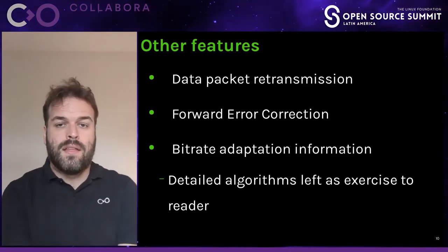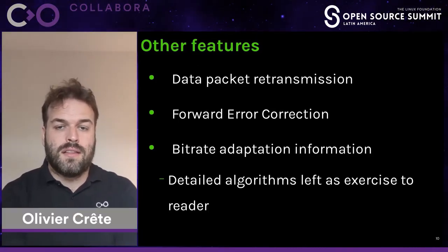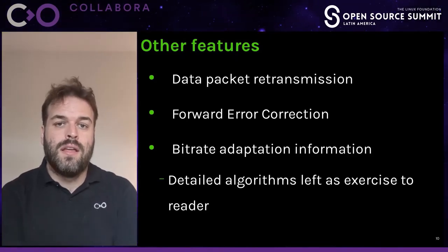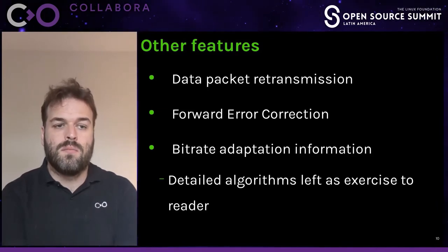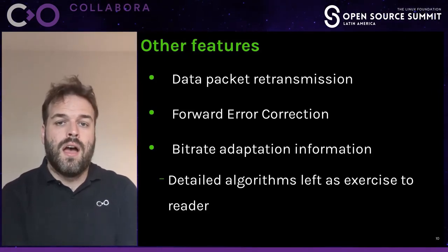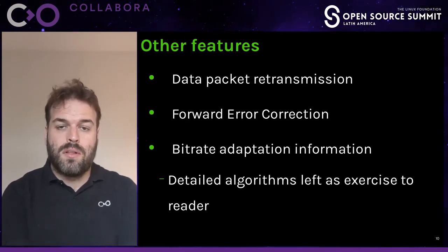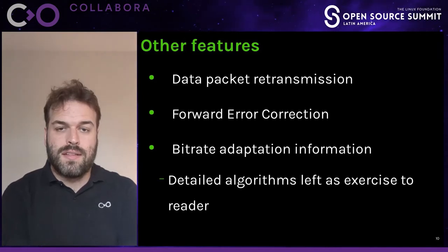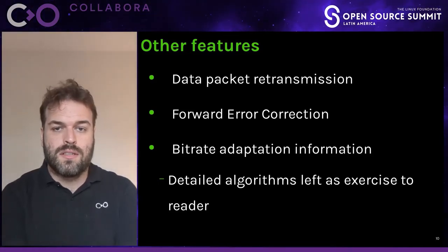WebRTC has a couple of other features. There's a way to retransmit audio and video packets that is used by the browsers. It supports forward error correction, which is mostly useful when there are a lot of errors not caused by congestion or when the latency of the link is quite high — for example, a satellite link. It also transmits information that enables bitrate adaptation. WebRTC itself does not specify how to do bitrate adaptation — that's left as an exercise to the reader — but appropriate information is transmitted and different browsers have their own implementations. Most actually use the code that comes from Google's Chrome, though other implementations and protocols exist.